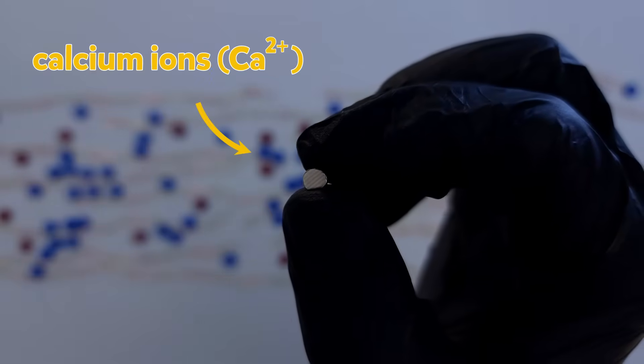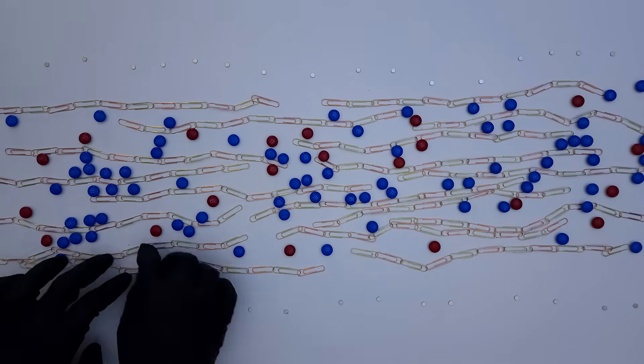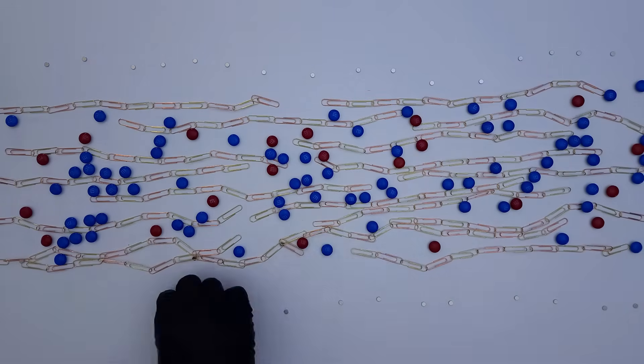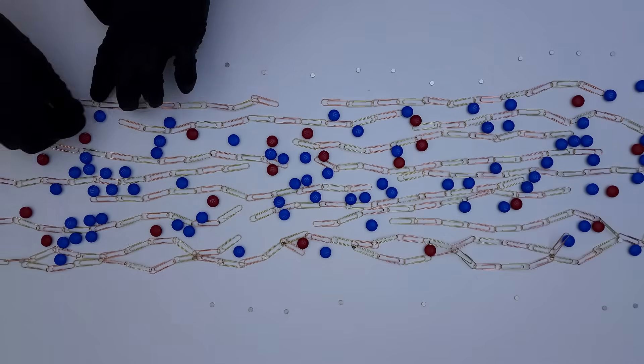But when we add these chains to a solution of calcium chloride, things get interesting. Calcium ions have a double positive charge. This means each one can bind to two alginate chains. As soon as our stream of sodium alginate hits the calcium chloride solution, the calcium ions start connecting these chains together.